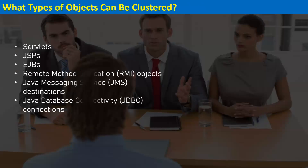What types of objects can be clustered? From an interview perspective, you can say we can cluster servlets, JSPs, EJBs, RMI objects, JMS, and database JDBC data source connections — essentially all configurations done with WebLogic. Servlets and JSPs need a servlet container, which is part of the web server. JMS, JDBC, and EJBs require an application server with an EJB container and enhanced functionalities available in WebLogic.